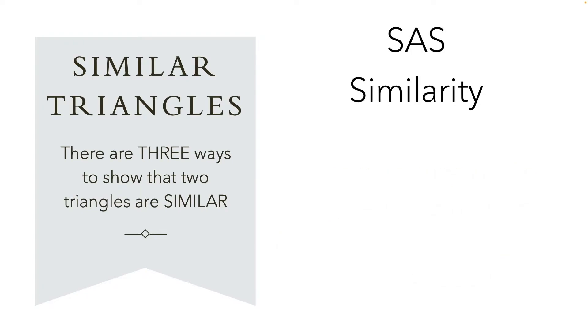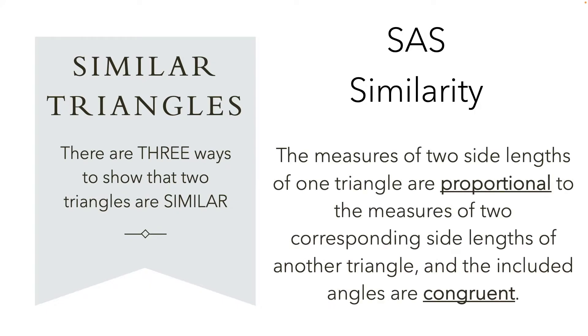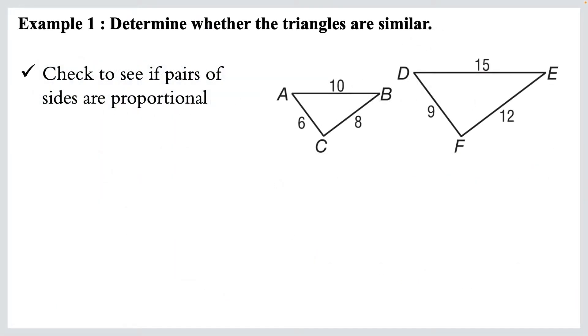And then we can also talk about the side-angle-side similarity. This one's a bit of a mouthful, but that's when the measures of two side lengths of one triangle are proportional to the measures of two corresponding side lengths of another triangle, and then the included angles are congruent. So we've got two sets of corresponding sides that are proportional, and the angle between them is congruent. Okay, let's look at some examples.